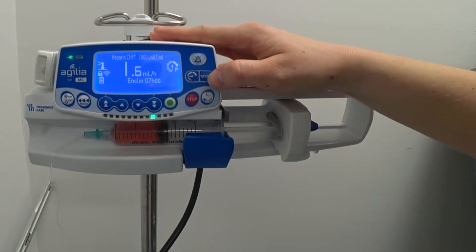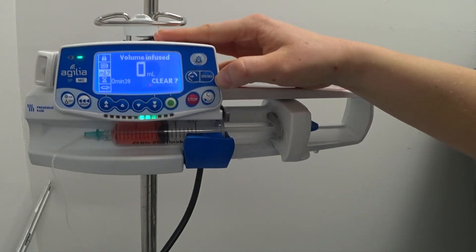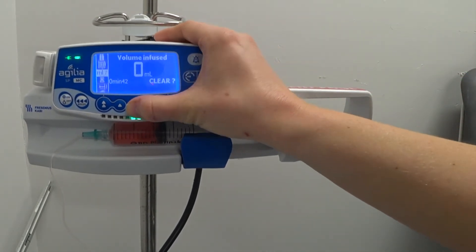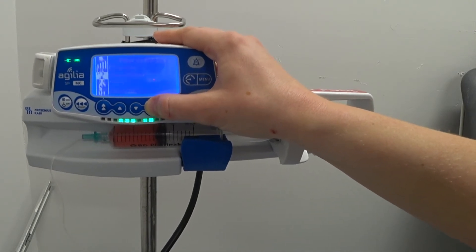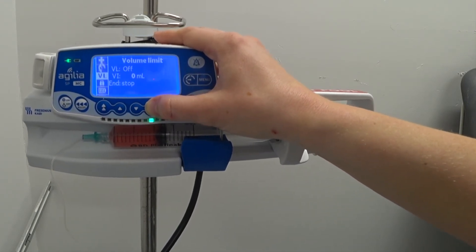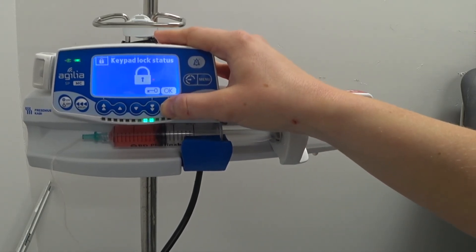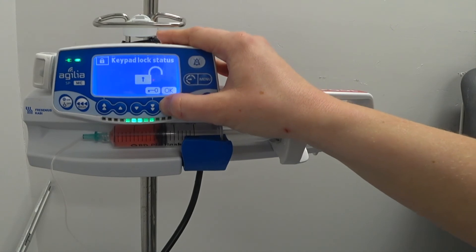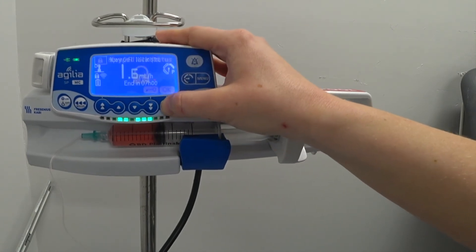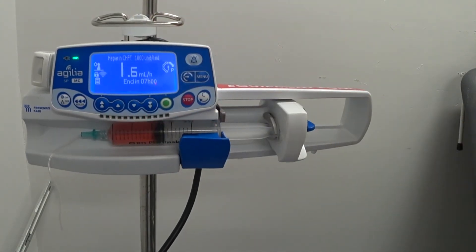To lock and unlock the machine, we press the menu, go down to the padlock, press enter and you can lock and unlock from here. Once you've unlocked or locked, you can press OK and it will go back to the main screen.